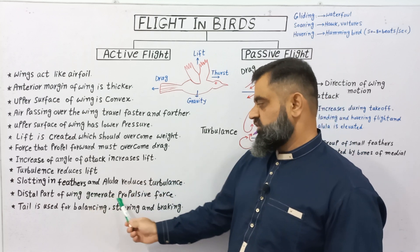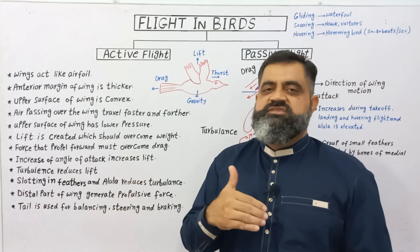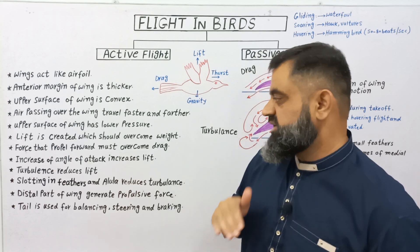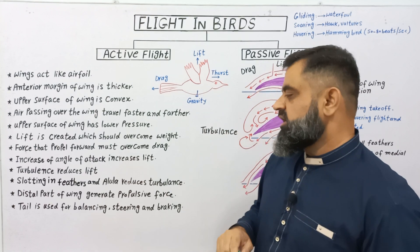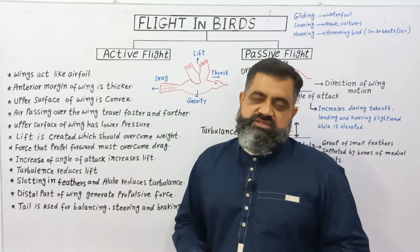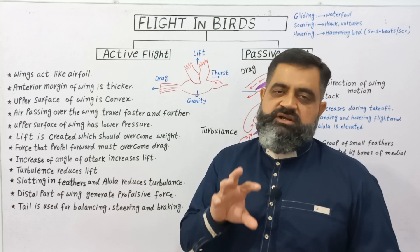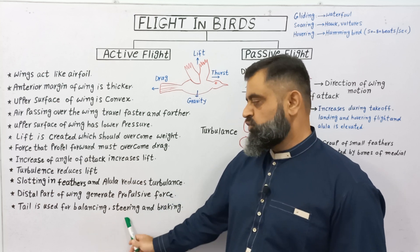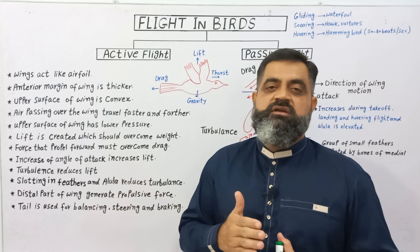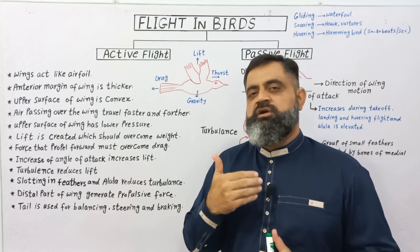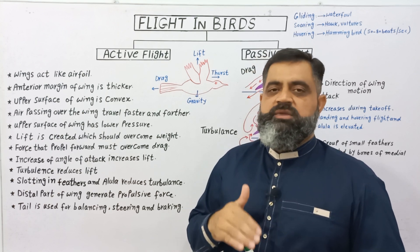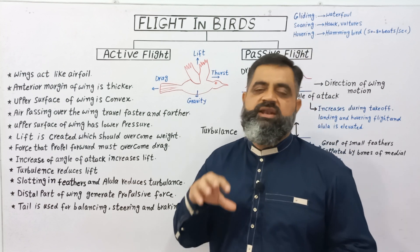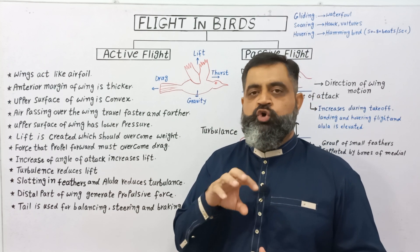The distal part of the wing generates propulsive force, which gives lift to the bird and also propels the bird in the forward direction. There are also tail feathers. The tail helps in balancing birds during flight, and also helps in steering — moving forward to the right side or the left side. The bird can steer itself with the help of its tail, and during landing, the tail also helps to stop the bird.